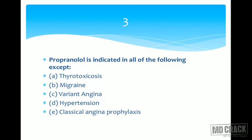We are left with variant angina. If you give a beta blocker in variant angina and block the beta receptors, the alpha receptors will have unopposed activity, which can produce more vasospasm and aggravate variant angina. To use it in this type of angina, you need adequate alpha blockade as well. So propranolol is contraindicated in variant angina — that is your answer.